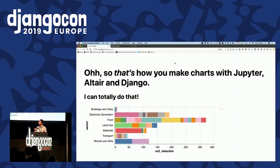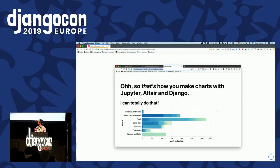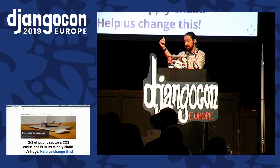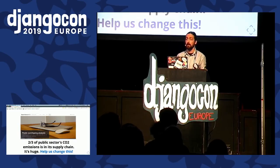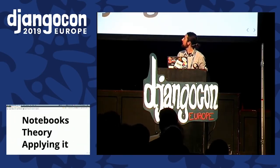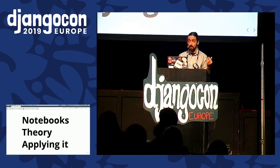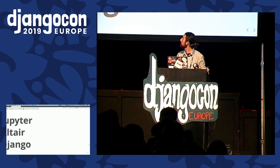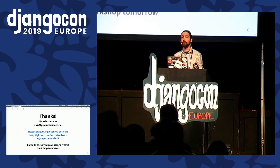I'm going to use the last of my time to say: if you do care about this stuff, I'm working with a company called Spend Network who paid for us to work on this. They're hiring, and they're looking to use these ideas to take the last 10 years of open data to find out how public money is being spent and see where the biggest levers are in terms of climate change. I said I'd talk to you about notebooks, give you some theory, and show you how to apply it to present things in a visually arresting and dense way — using Jupyter, Altair, and Django. I think I did that. Thank you, everyone.